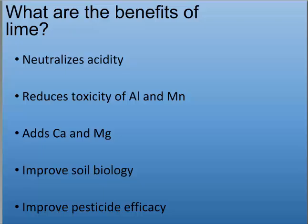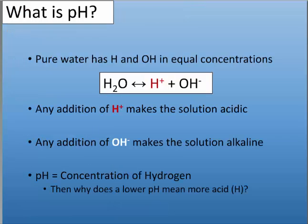First, we want to understand the benefits of lime. Number one, we add it to soil to neutralize acidity. As a side product, it helps reduce the toxicity of elements like aluminum and manganese. It can add calcium and magnesium depending on your lime source. It can also improve soil biology and pesticide efficacy. Soil microbes, just like plants, prefer a certain pH range and are involved in nutrient cycling and breakdown of organic matter.